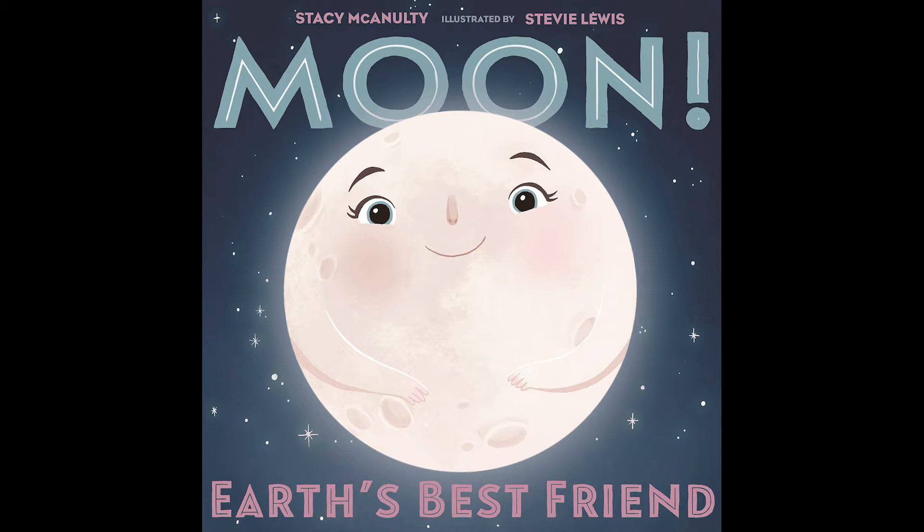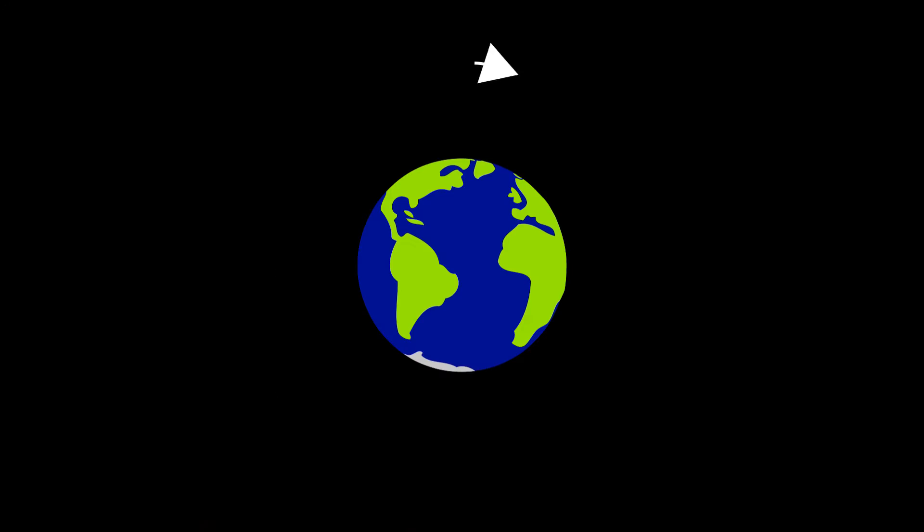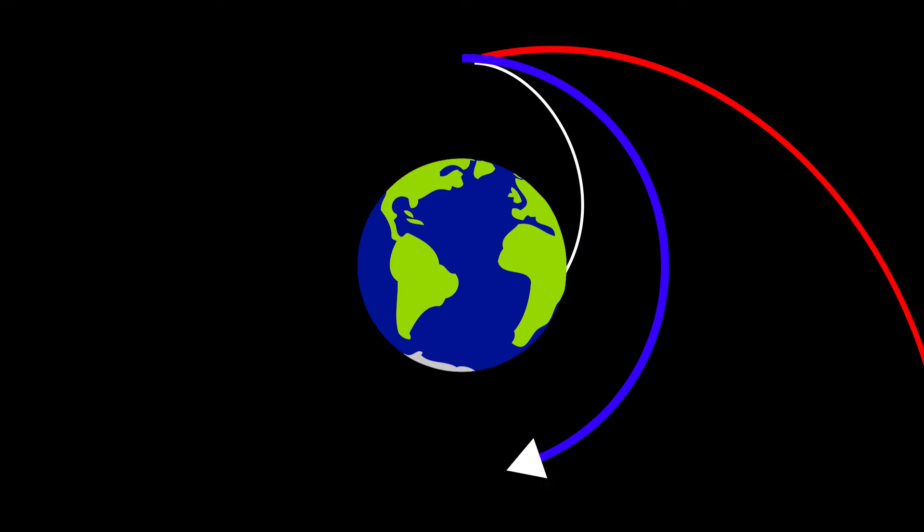So if a satellite wasn't traveling fast enough, it would fall back to Earth. If it was moving too fast, the satellite would fly off into space. But if you get your speed just right, the Earth's gravity will keep you trapped in an orbit, always falling but never hitting the ground.